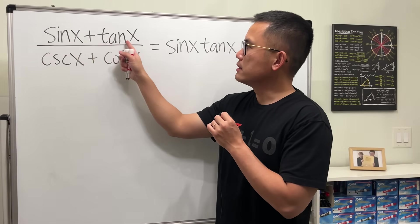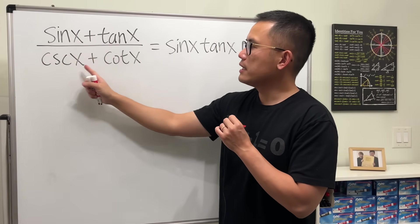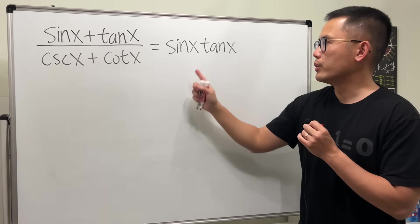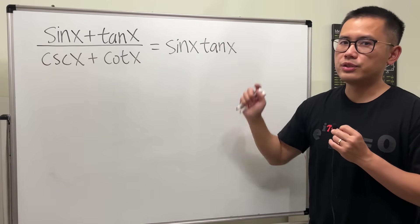We are going to show that sine x plus tangent x over cosecant x plus cotangent x is equal to sine x times tangent x.